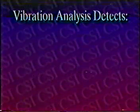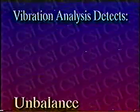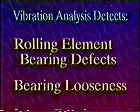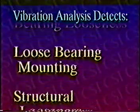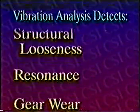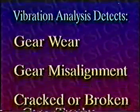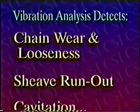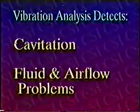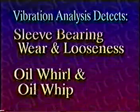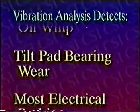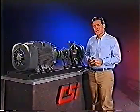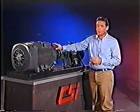Among the many mechanical and electrical problems that vibration analysis can determine are unbalance, misalignment, bent shaft, rolling element bearing defects, bearing looseness, loose bearing mounting, structural looseness, resonance, gear wear, gear misalignment, cracked or broken gear teeth, belt wear and looseness, chain wear and looseness, shield run out, cavitation, fluid and airflow problems, sleeve bearing wear and looseness, oil whirl and oil whip, tilt pad bearing wear and most electrical problems. Simply put, vibration analysis can be utilized to determine the source of just about anything that can cause machinery or production downtime.